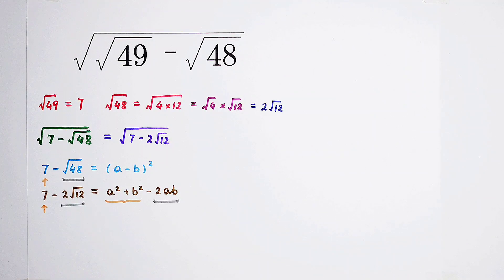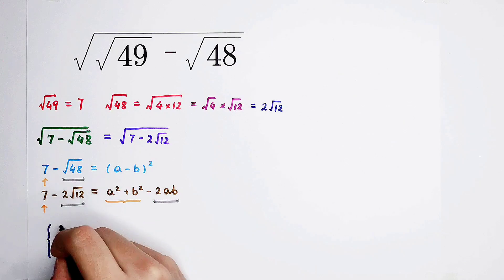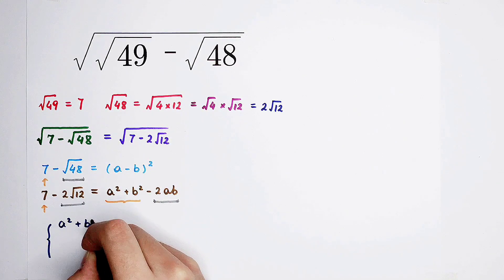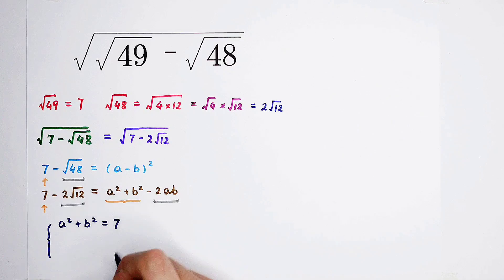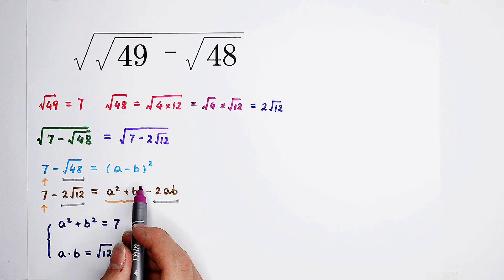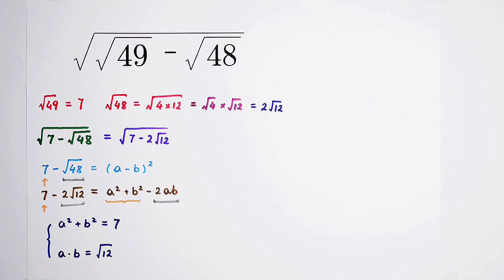Okay, let's find the values of a and b. Of course, we only have to solve for the positive a and positive b. If we square both sides of the second equation, then we will get a² times b² equals 12.